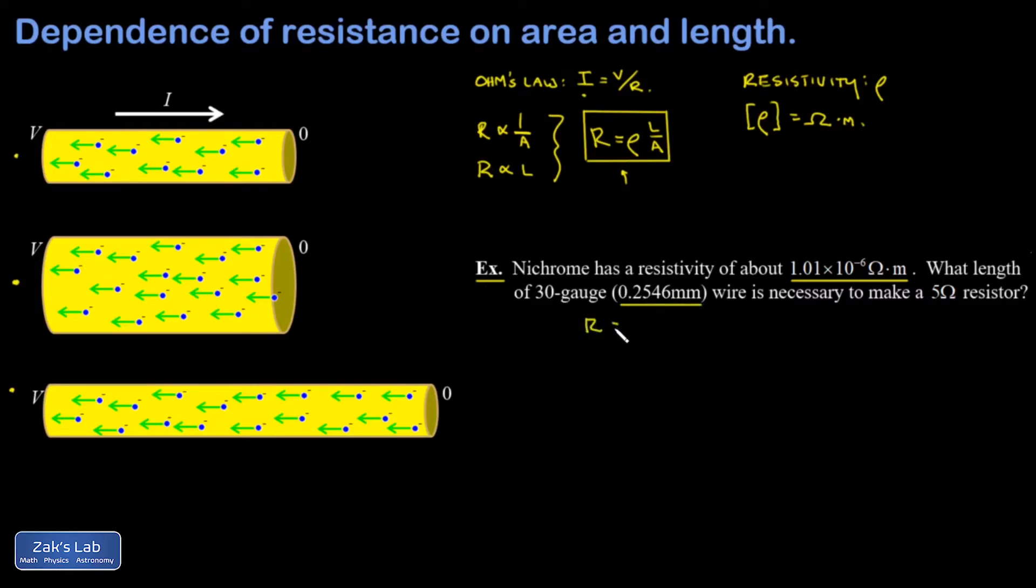We'll start with our new formula R equals rho L over A. I'm trying to solve for length, so I multiply by A on both sides and divide by rho, and I get length equals R times A over rho.